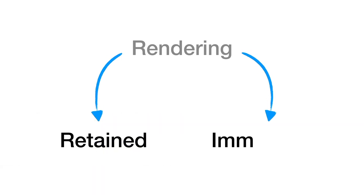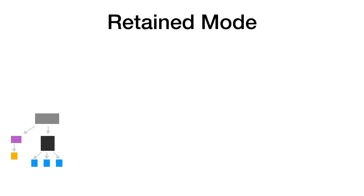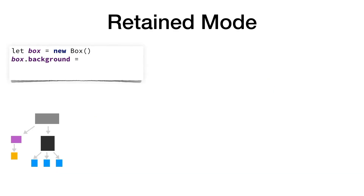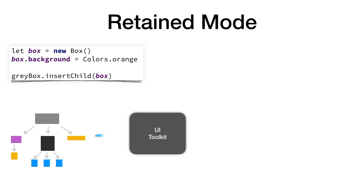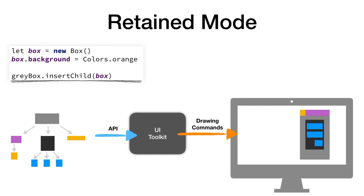It turns out there are only two ways of rendering a UI: retained or an immediate mode. The retained mode is definitely the most popular way, and a lot of the UI platforms of today have adopted this as the primary API, and there is a good reason for that. A simple and clear API is what we all want, and the retained mode is definitely a way to get there.